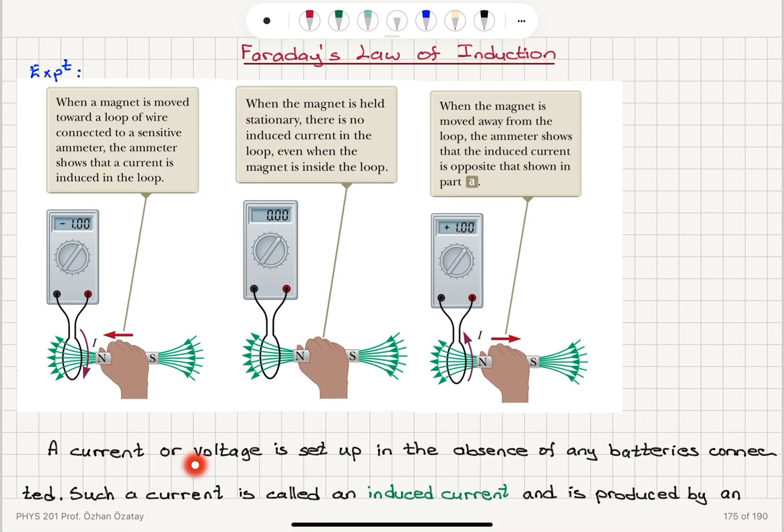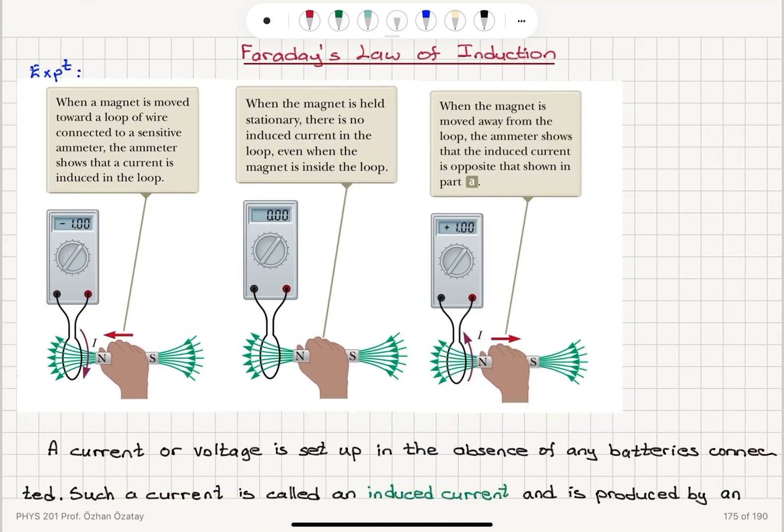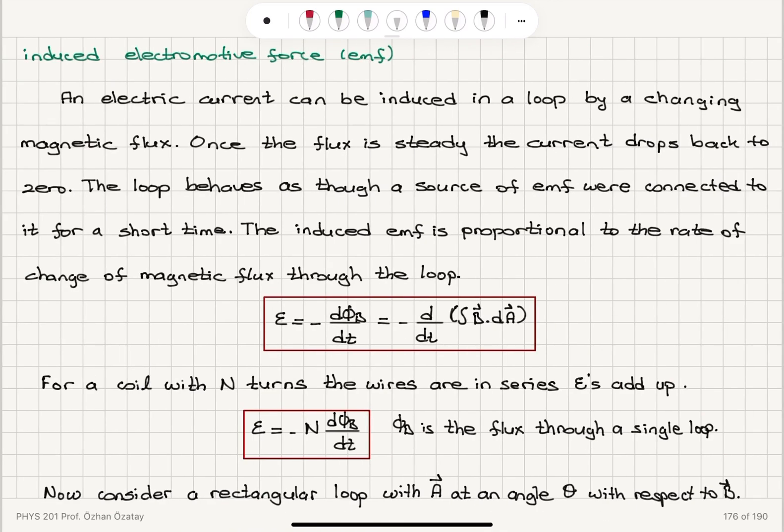A current or voltage is set up in the absence of any batteries connected in this loop. Such a current is called an induced current and it is produced by an induced electromotive force, EMF. This is due to an induced EMF here. There is a potential difference that develops here that creates this current.